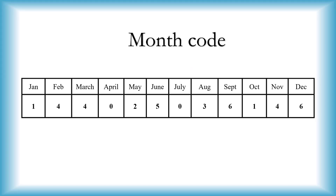To solve these types of questions, there are certain codes that we need to memorize. We have codes for the months, codes for the centuries, and codes for the days of the week. The codes for the months are given in this table — from January to December, the codes are 1, 4, 4, 0, 2, 5, 0, 3, 6, 1, 4, 6.